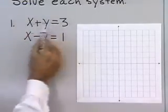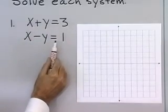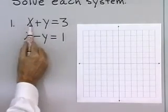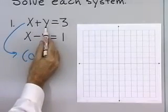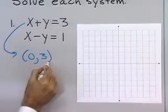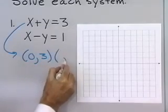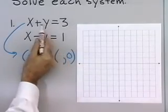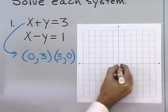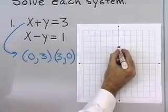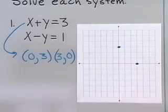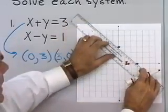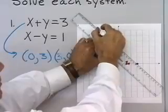This is a system of equations — two linear equations considered at the same time. I'm going to start by graphing the first one. Let x be equal to 0; when we do that, y is equal to 3. Let y be equal to 0; when we do that, x is equal to 3. So x is 0, y is 3, and x is 3, y is 0. I'll draw a line between those two points, and that is the graph of my first equation.